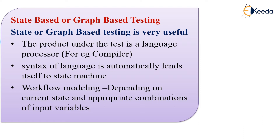When the requirement changes from one state to another — from the start to some other state like working, stop, or pause — and later to an end condition, these states are what we are going to test. In this test, the state, the action, and the events are all going to be tested.